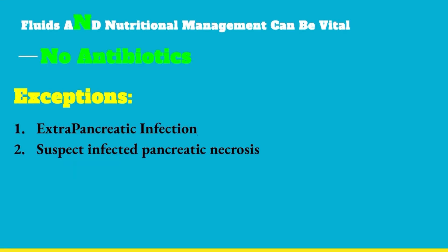N is for no antibiotics. Pancreatic patients can have high WBCs because of hemoconcentration, which doesn't necessarily mean infection. There are exceptions: if the patient develops an extrapancreatic infection like a UTI or pneumonia, then antibiotics are indicated for those infections. If cultures are negative and no source of infection is found, antibiotics should be stopped. The second exception is if we suspect infected pancreatic necrosis, which typically develops over weeks.